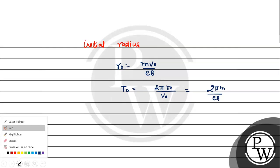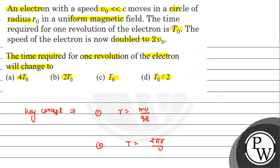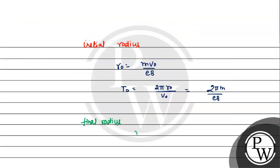Now for the final radius when velocity is doubled: Rf = m(2v0)/(eB) = 2mv0/(eB) = 2r0. So the radius is just doubled, giving 2r0.